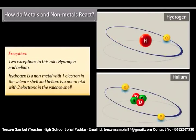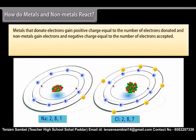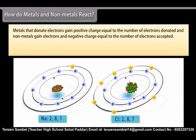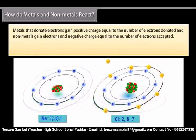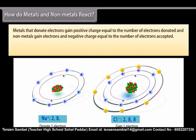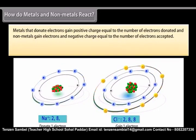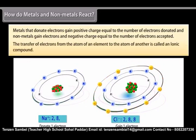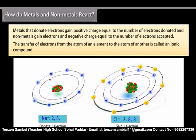Metals that donate electrons gain positive charge equal to the number of electrons donated and non-metals gain electrons and negative charge equal to the number of electrons accepted. When a metal atom donates 1, 2 or 3 electrons from its valence shell to another non-metal atom that has the ability to accept these electrons, it is known as electrovalency. As a result of this, both these atoms form the structure of an inert gas. The transfer of electrons from the atom of an element to the atom of another is called an ionic compound.